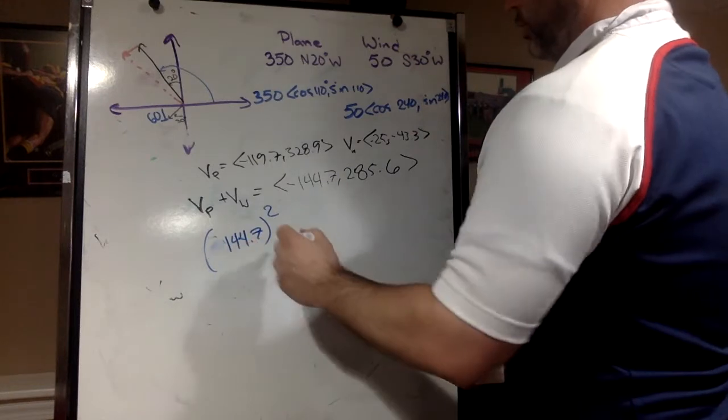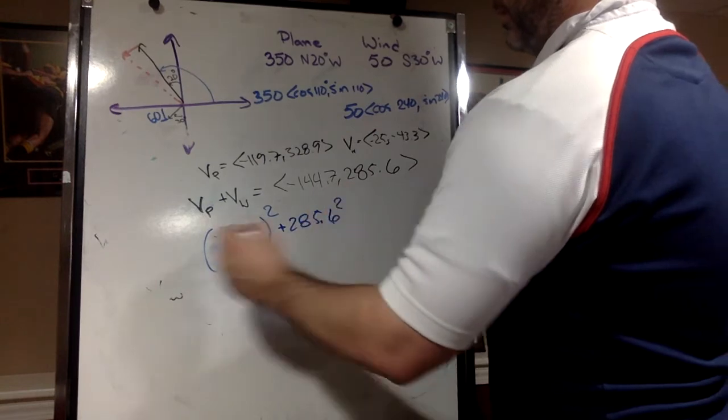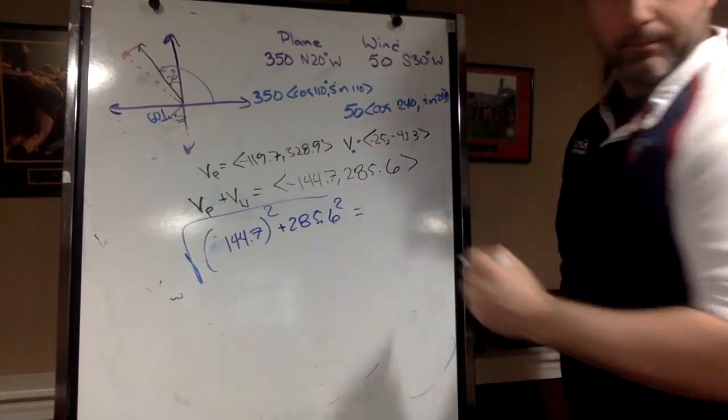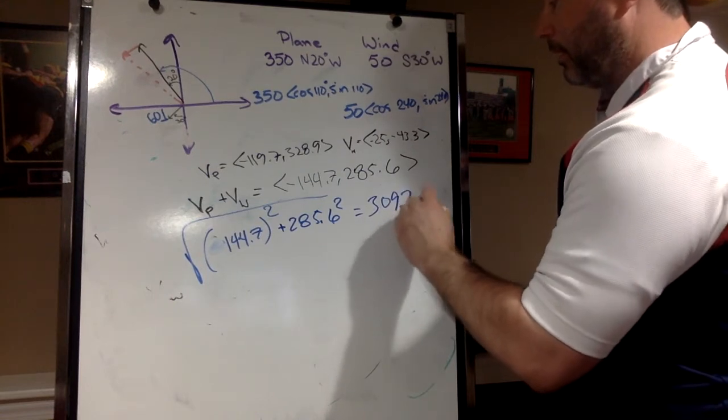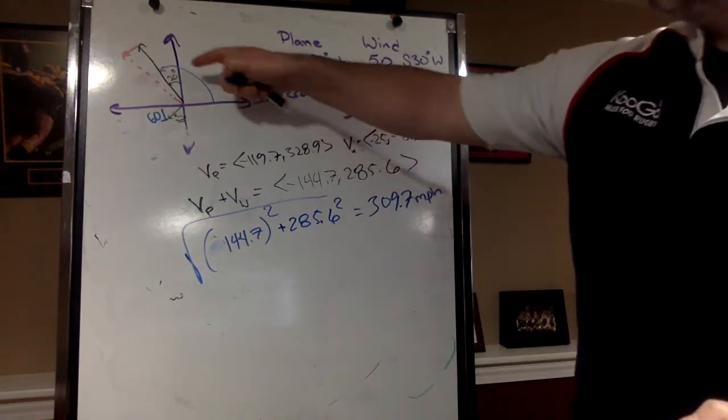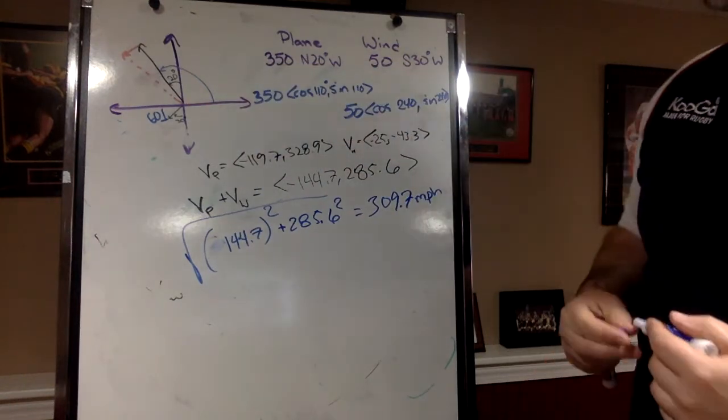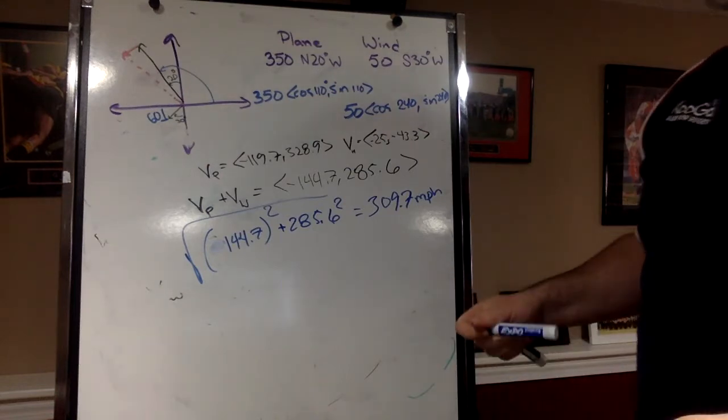Plus 285.6 squared, square root the whole thing, and you get 309.7 miles per hour. Well that makes sense - I was going 350, I almost have a 50 mile an hour headwind. If it was directly opposite, yeah we'd be 50 miles an hour slower, but we're not.